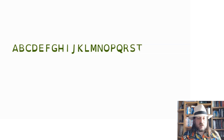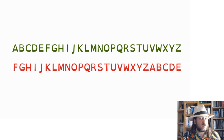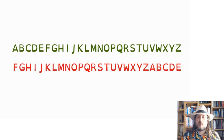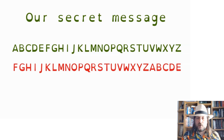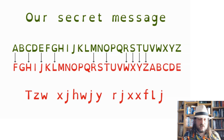Caesar's substitution cipher worked like this. First, you need to write out the alphabet twice. The first time you write it out normally, and the second time you start at a different letter and write it all the way through, wrapping around from Z back to A until the two alphabets line up. You can start the second alphabet at any letter except A, because that wouldn't make a very good cipher alphabet. Then we take each letter of our clear text message and find which letter it matches up to in the second alphabet, substituting each one until we have our secret message.